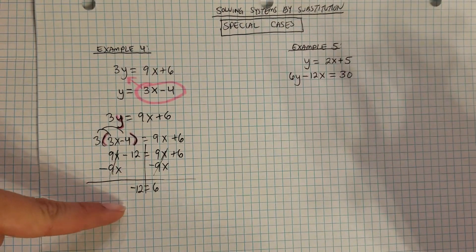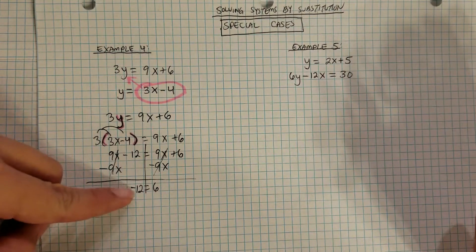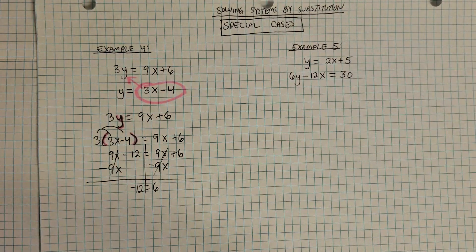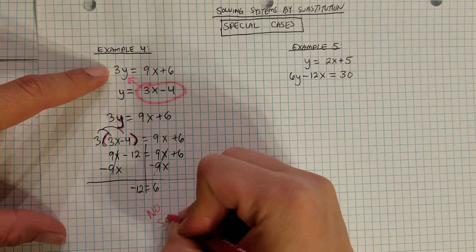Now, if you stop and think about that, that equation makes absolutely no sense. How is negative 12 going to be equal to 6? So this is a scenario in which you have a system of equations with no solution.